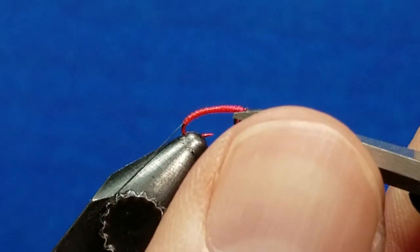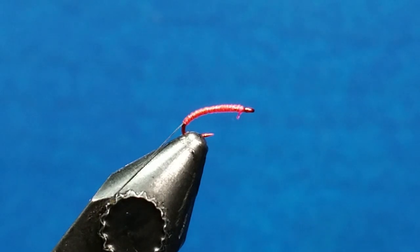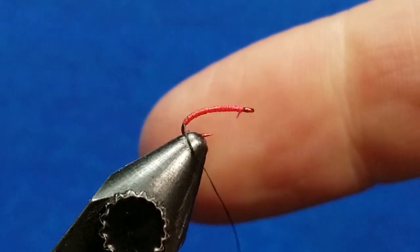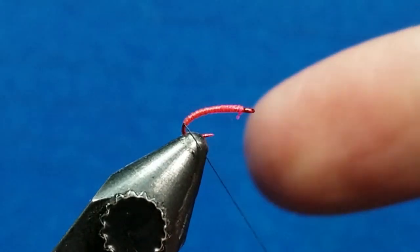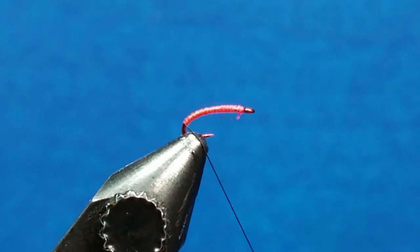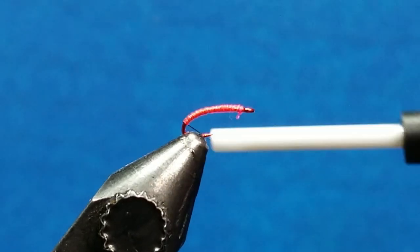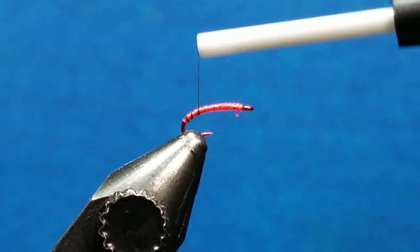Just snip that off with the scissors. Before I bring this thread forward, I'm going to give it a nice clockwise spin, and that's going to tighten it up so that my segmentation is nice and thin. I'm looking to lay down about five wraps here.